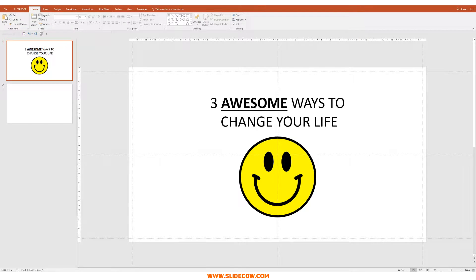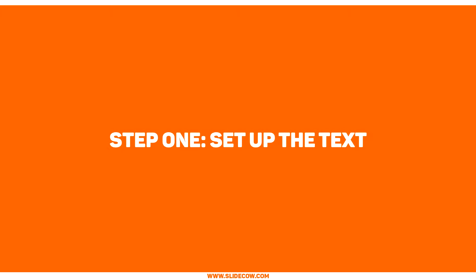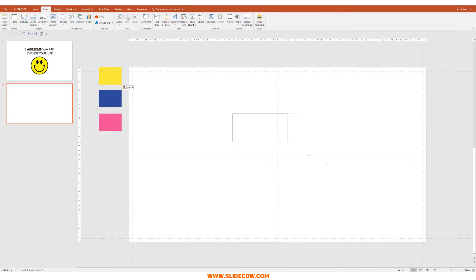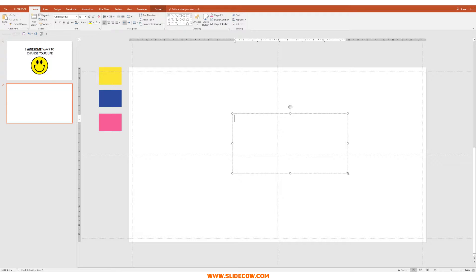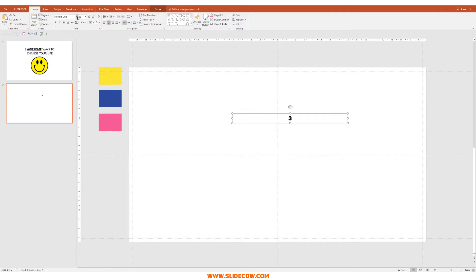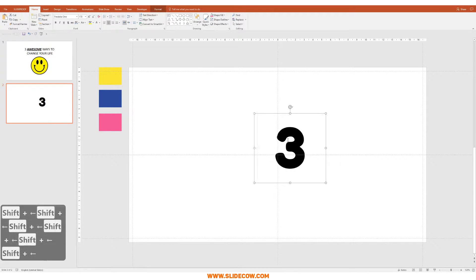Let's get started. Step 1: set up the text. So assuming that we have a blank slide, the first thing we're going to do is head over to Insert, click on Text Box, draw something out, and type in the number 3. Just 3 — no other text. We're going to center it, change the font to Fredoka 1, which is a Google font, and change the font size to something huge — I'm thinking something like 170. Look at that huge number 3 right there. Let's just reduce the box size a bit.